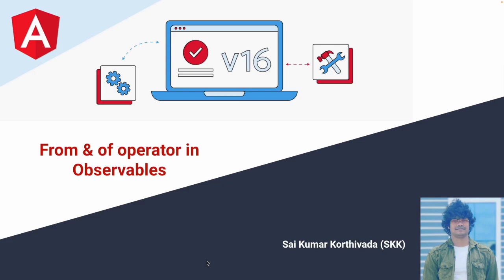In general, we use the from operator for complex data operations, whereas we use the of operator for very simple data. For example, if you have 1, 2, 3, 4 — a list of static data — you can go with the of operator. But if you have some dynamic data, then you can go with the from operator.